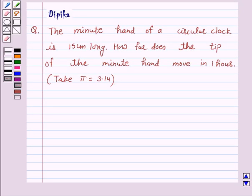Hello and welcome to the session. I am Deepika here. Let's discuss a question which says the minute hand of a circular clock is 15 cm long. How far does the tip of the minute hand move in 1 hour? Take pi equals 3.14.